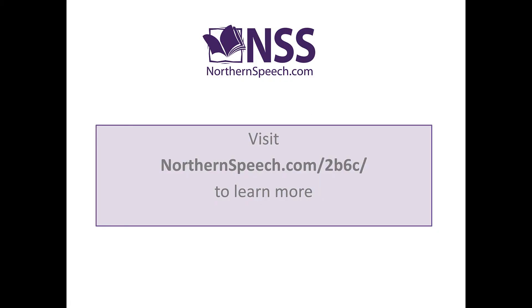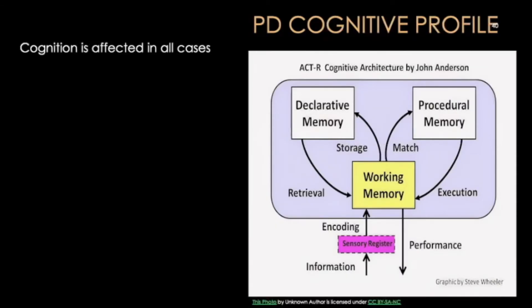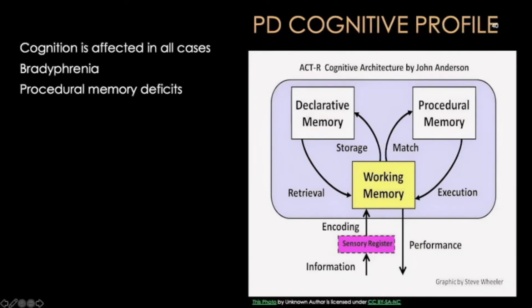In terms of the cognitive profile of individuals with Parkinson's disease, cognition is affected in all cases of individuals who have had the disease for several years. In the very earliest stages, cognitive changes aren't sufficient to meet criteria for MCI, but there is slowness in thinking referred to as bradyphrenia — analogous to bradykinesia, which is slowness in movement. This is very characteristic of Parkinson's disease, in large part because of procedural memory deficits. Cognitive functions that operate below awareness, such as priming, are slower, retrieval is slower, and working memory deficits are also apparent.